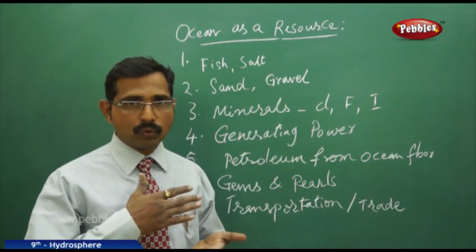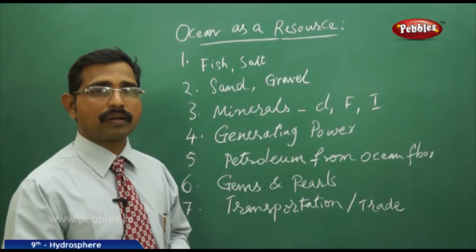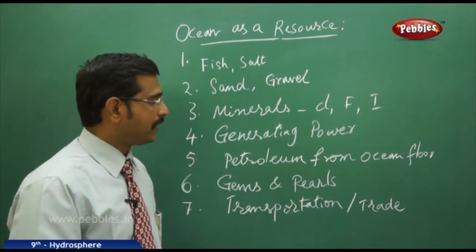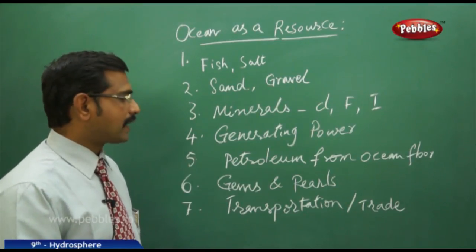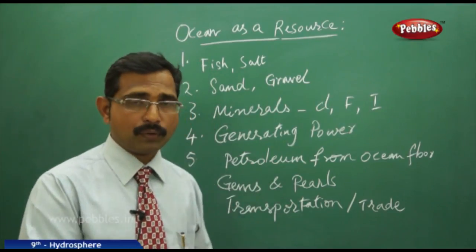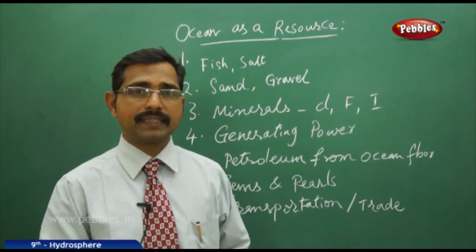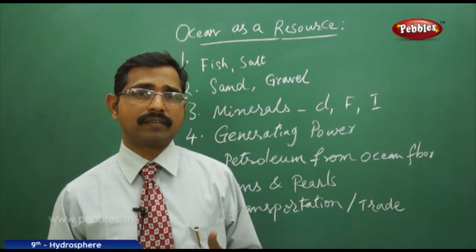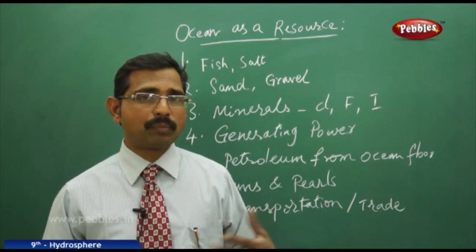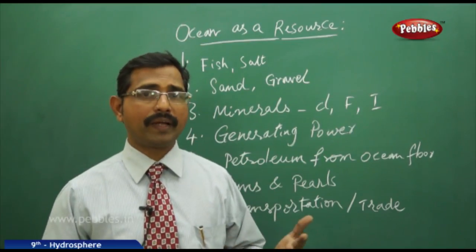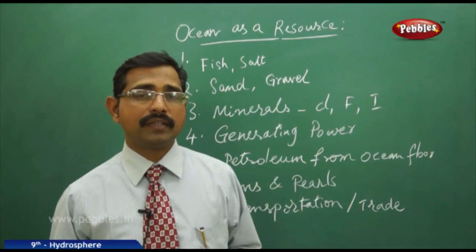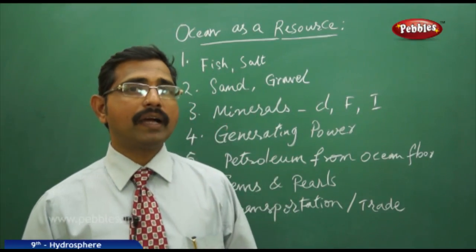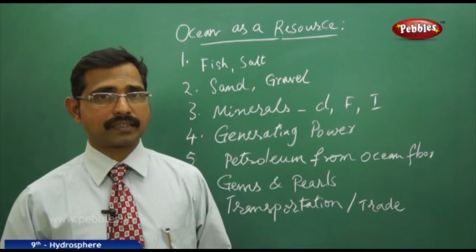We also generate power through ocean currents, and petroleum — a major resource — comes from the ocean floor. Gems, pearls, transportation, and trade are additional benefits from the oceans. However, one very painful issue is that dumping of plastics and waste is affecting our oceans — for example, whales and large fish are disappearing due to water pollution. We must not dump plastic waste in the sea.